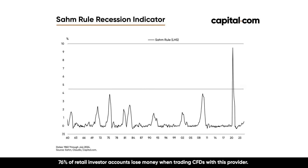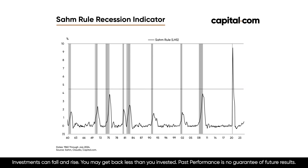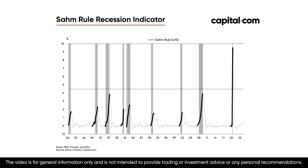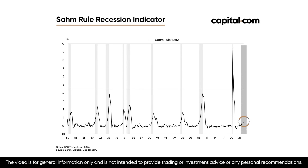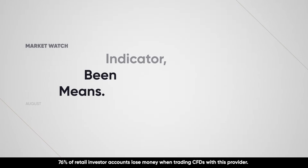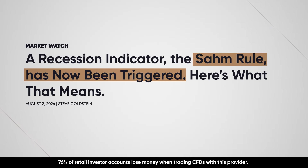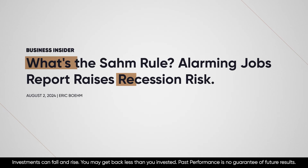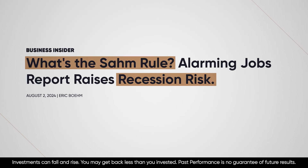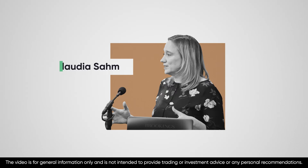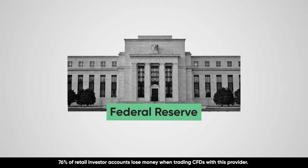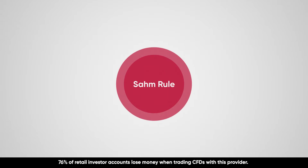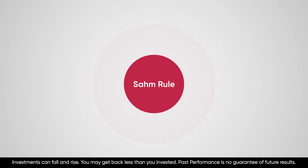Zooming out to the 65 years of historical data that we have on the SOM rule, we do see that in the last nine global recessions, the SOM rule has triggered in every single case, which would mean we're about to enter the 10th economic downturn since 1960. This has actually made the news headlines, with outlets pointing out the increased risk of a recession. This rule was developed by Claudia Somm, an American PhD economist who worked at the U.S. Federal Reserve, and she recently shared her thoughts on the SOM rule being triggered today.